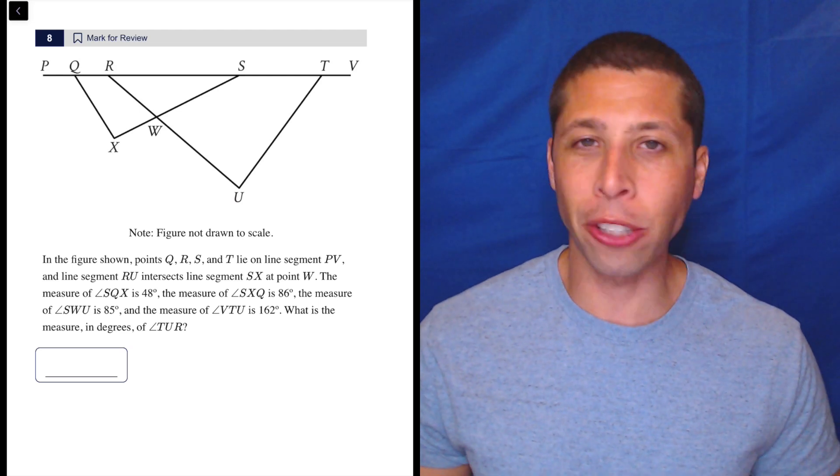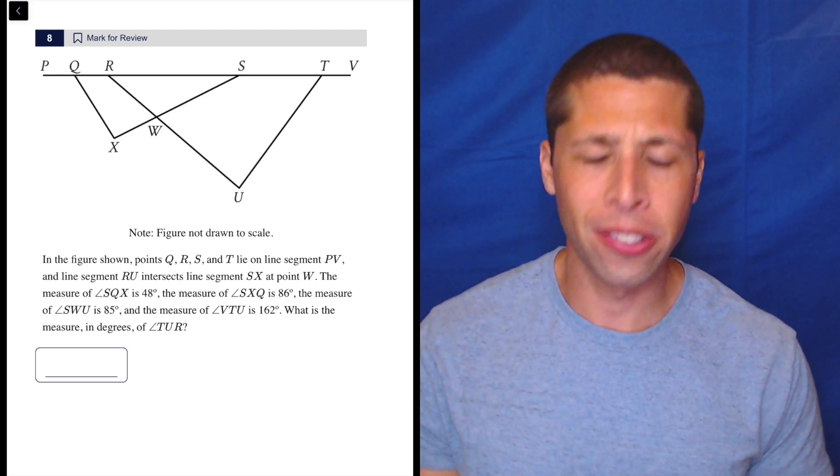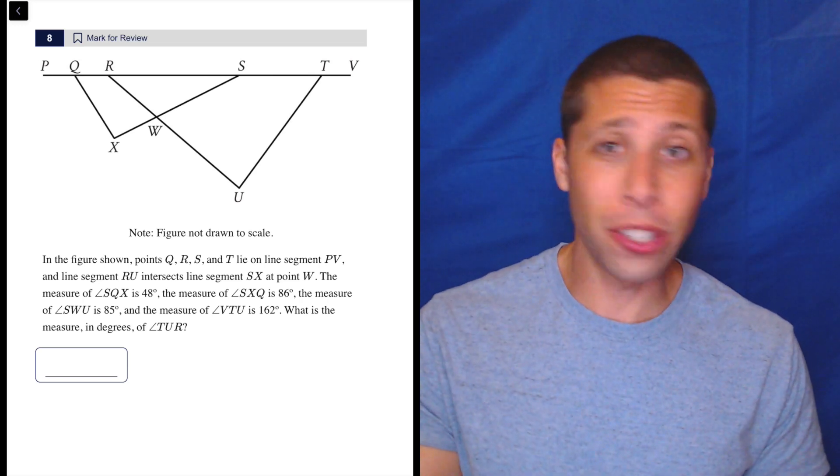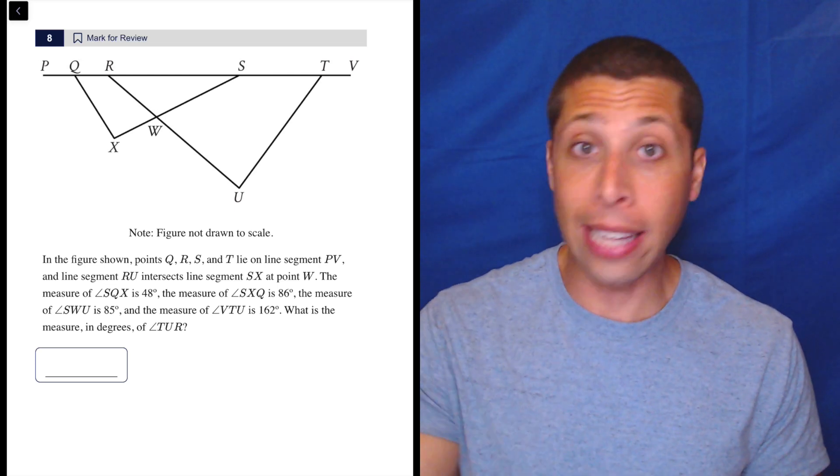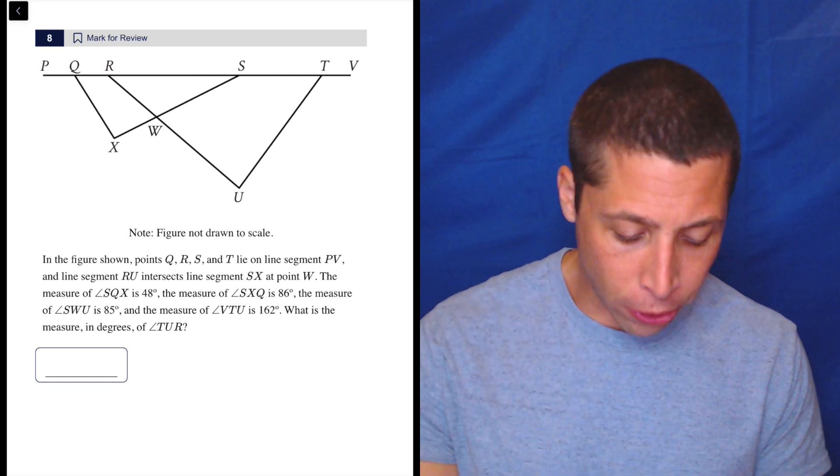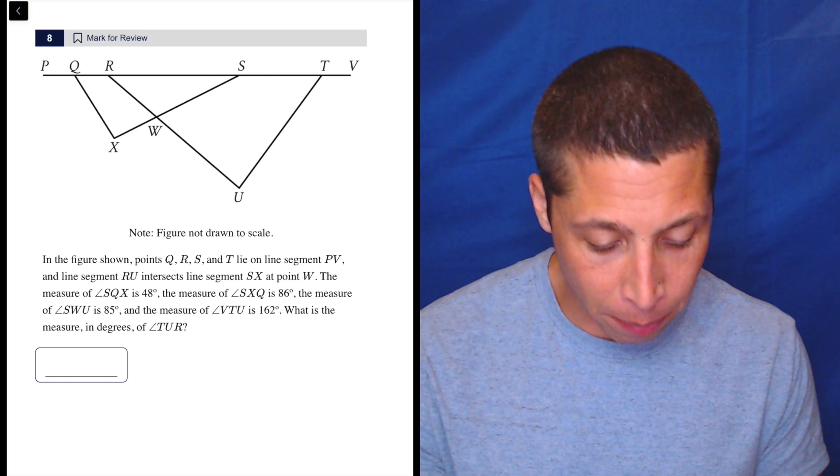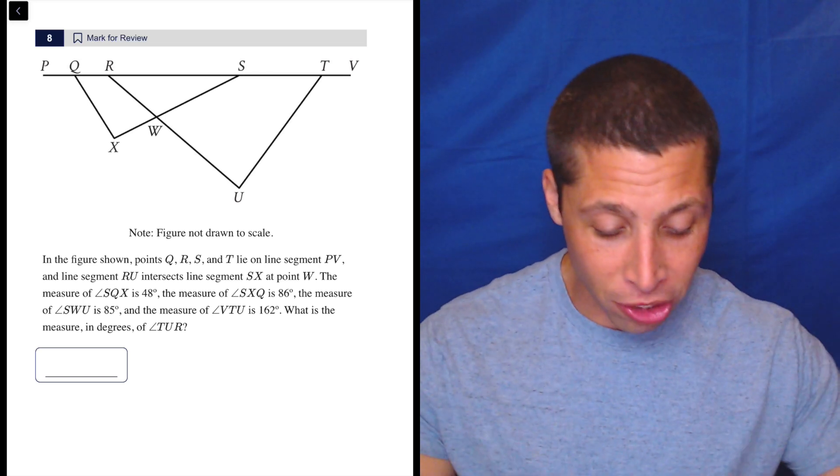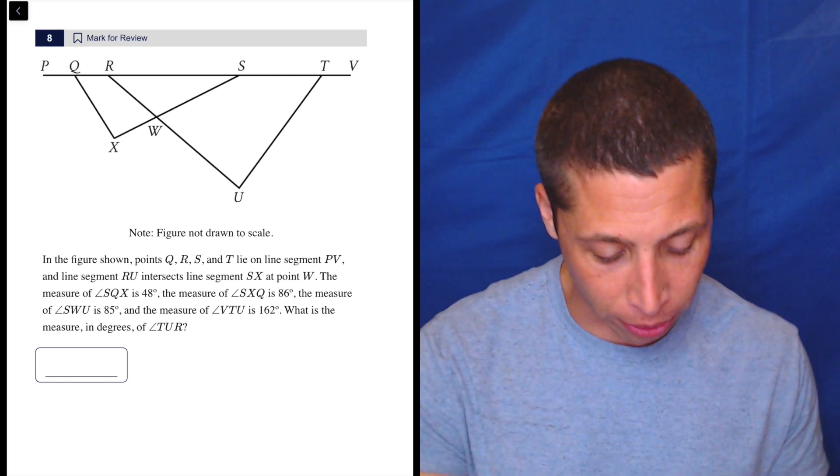For some reason, people have a lot of trouble with questions that are just about moving around a shape and looking at the different angles. Obviously, if this is a real test, you've got to draw this on your scratch paper. And notice it does not need to be to scale because they're drawing this into scale. So just draw your best version of it and then label everything because we've got some instructions to follow here. In the figure shown, points Q, R, S, N, T lie on line segment PV. Yes, they do. And line segment RU intersects line segment SX at point W. Now, all that is just kind of obvious. It's just saying that at W, things don't bend really. It's still a straight line right through.